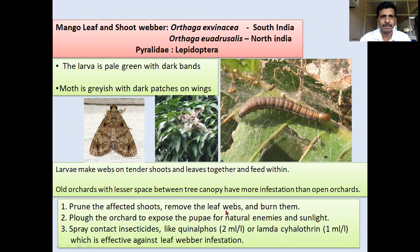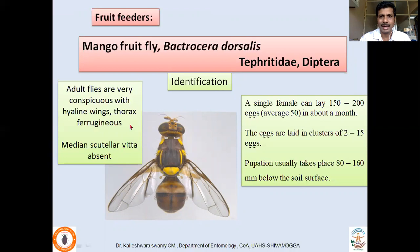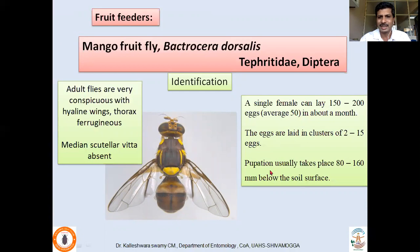Coming to fruit-infesting insects: Mango Fruit Fly, Bactrocera dorsalis, is a very important species. Adult flies are very conspicuous with hyaline wings and a ferruginous thorax. In Bactrocera dorsalis, there will be two scutellar bristles, whereas in Zeugodacus cucurbitae (melon fly) there are three scutellar bristles — this is how you can distinguish them. A single female can lay 150 to 300 eggs in about a month, laid in clusters of 2 to 15 eggs. Pupation takes place in soil — a very important point.